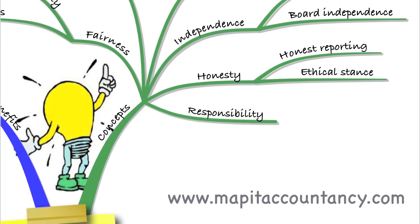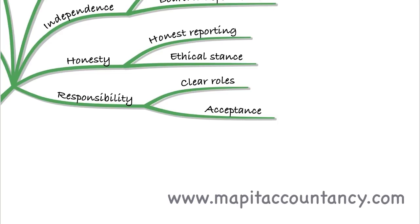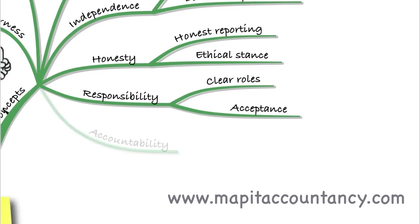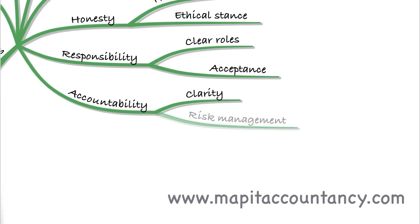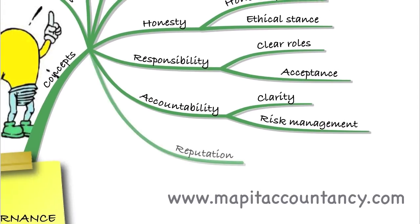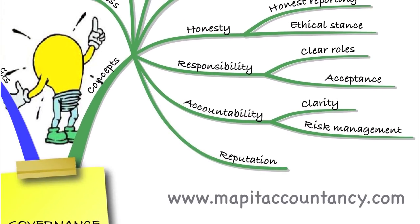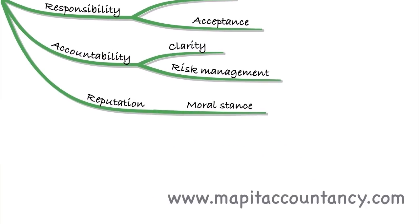We should always have honesty within the business — honest reporting and taking an ethical stance, which we'll look at when we examine corporate social responsibility. Aligned to that, we'll look at responsibility within the organisation, meaning clear roles and acceptance of that responsibility. We'll also look at accountability, meaning acting with clarity and having a clear risk management process. All of this means we'll have a good reputation for the business, allowing us to take a moral stance and ensure the reputation of the business is not damaged.